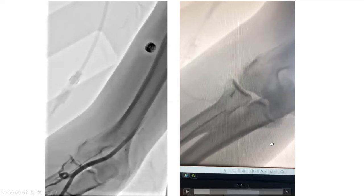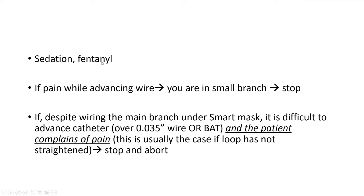Throughout all those cases, give good sedation and fentanyl, and good doses of nitroglycerin — at least 200 micrograms — and verapamil at least half a milligram through the radial sheath. If there is pain while advancing a wire, that means you are in a small branch — stop.